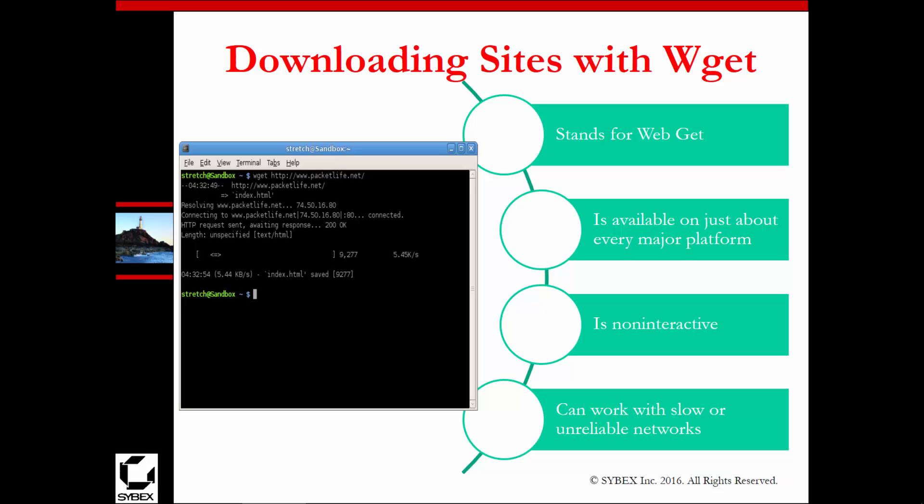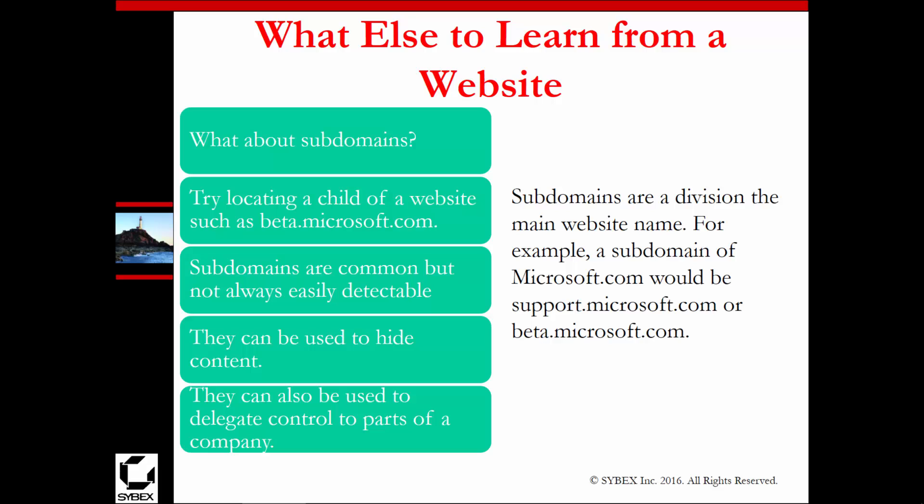You can also use WGit, which stands for WebGit. It's available for almost any platform, it's non-interactive, and it can work on slow or unreliable networks because it's a very slow, passive tool. With these tools you can learn about subdomains, children or linked websites, and some hidden content — that's always a big one.